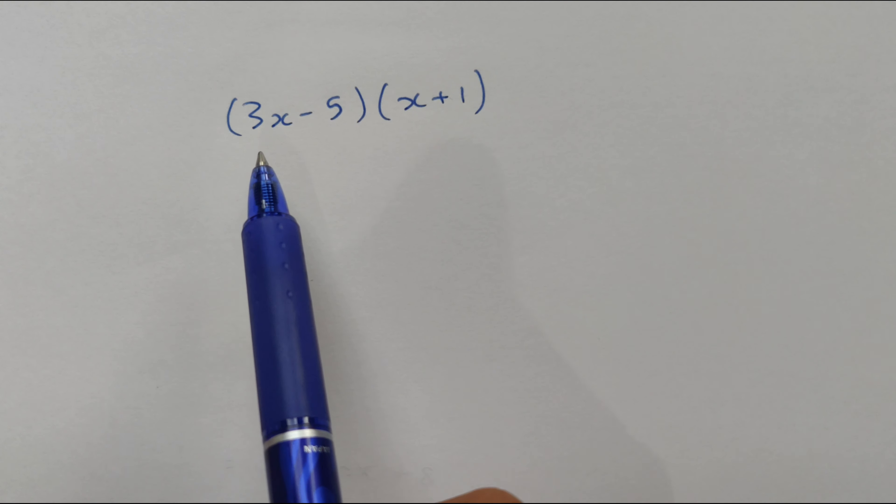Let's expand this using the same approach. So, the first thing we want to do is 3x multiplied by x, which is 3x squared. Then we want to go 3x multiplied by 1, which is 3x.